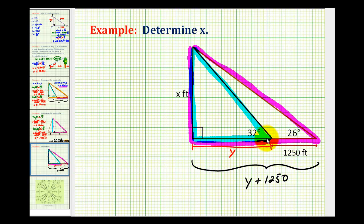Now we'll set up two trig equations involving x and y, and then we'll have to solve them as a system of equations. If we take a look at this smaller right triangle, x is the opposite side and y is the adjacent side to the given angle.